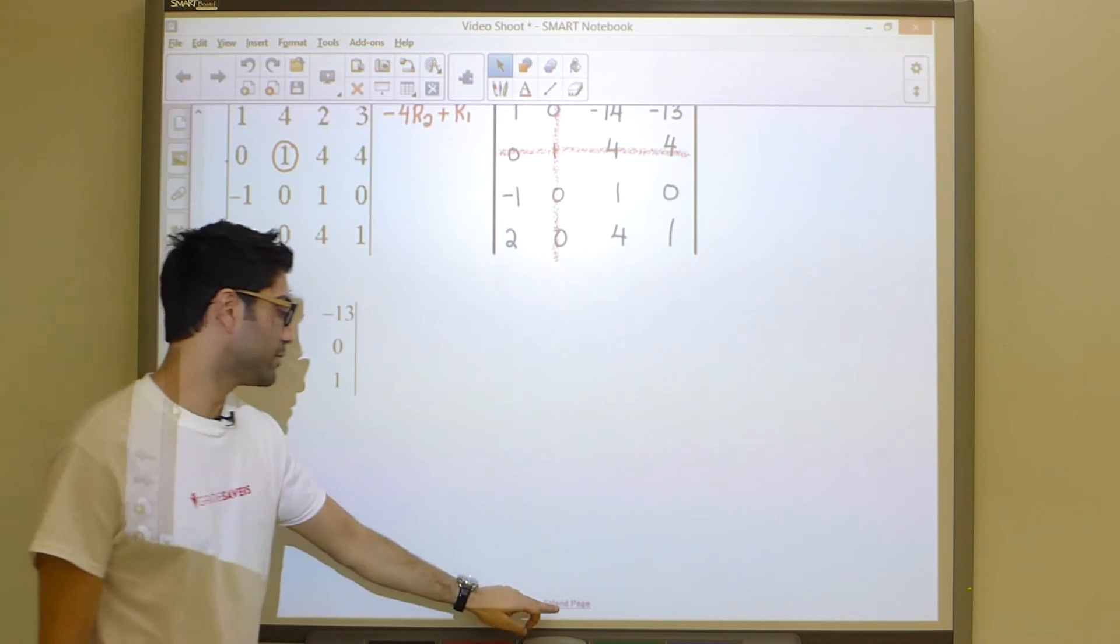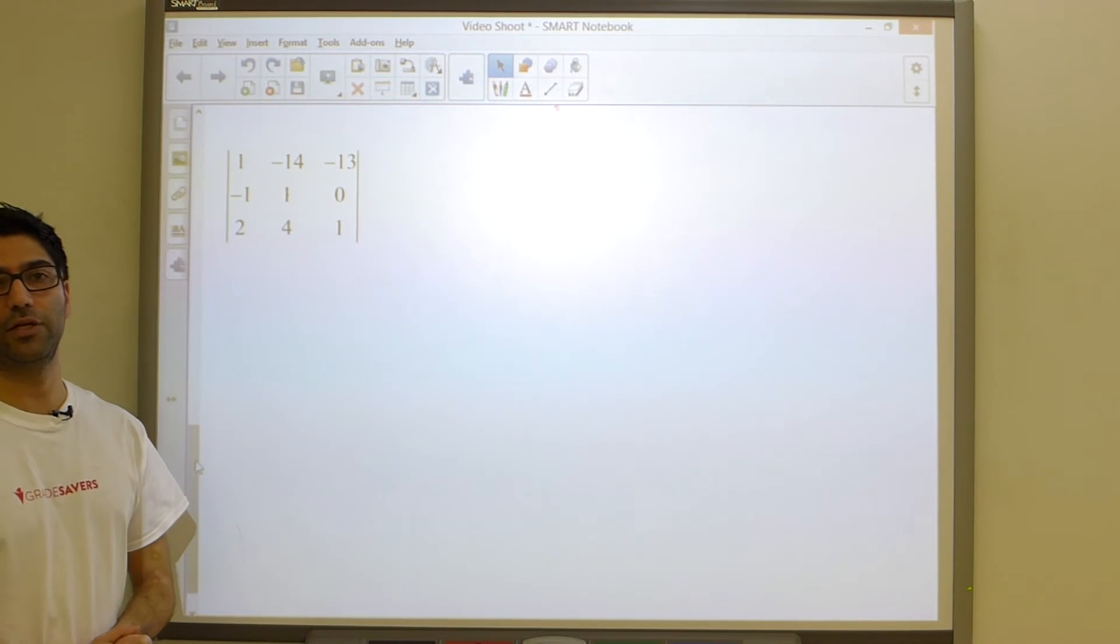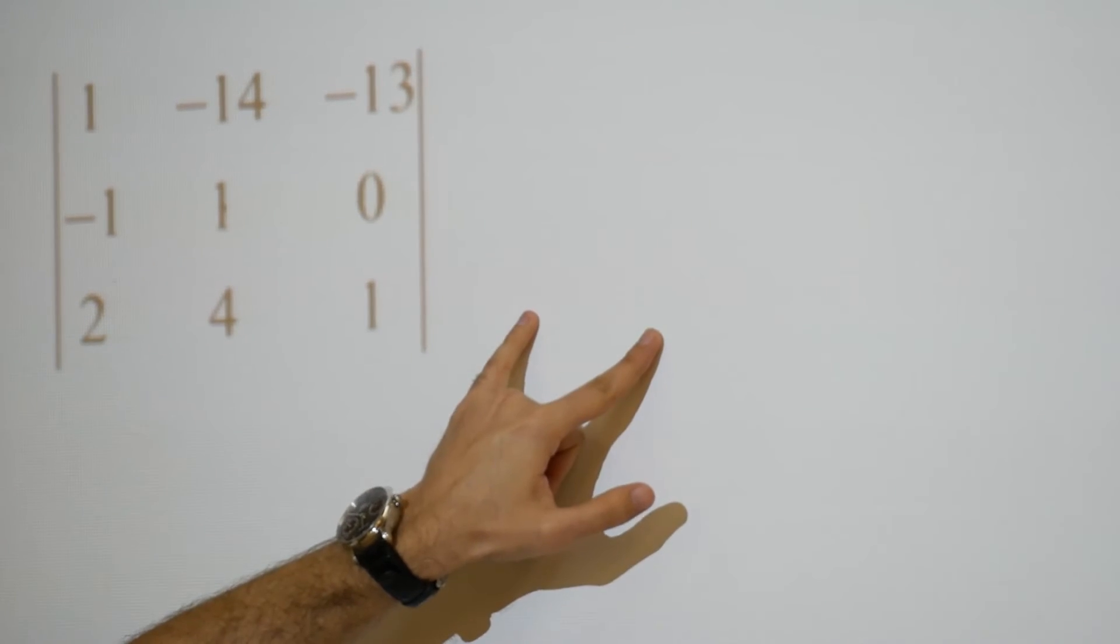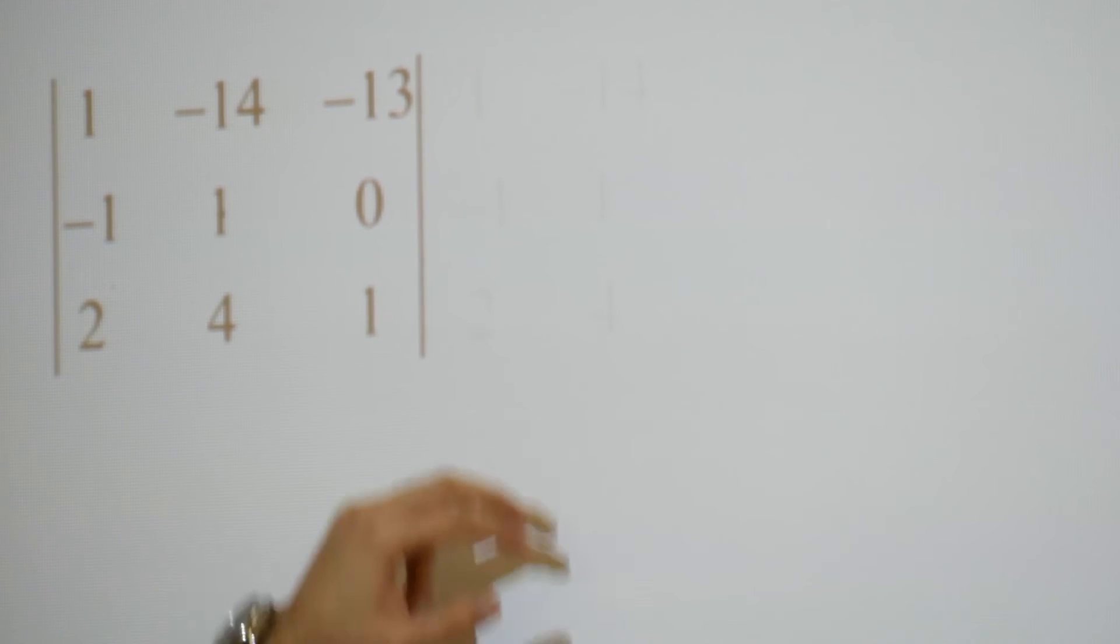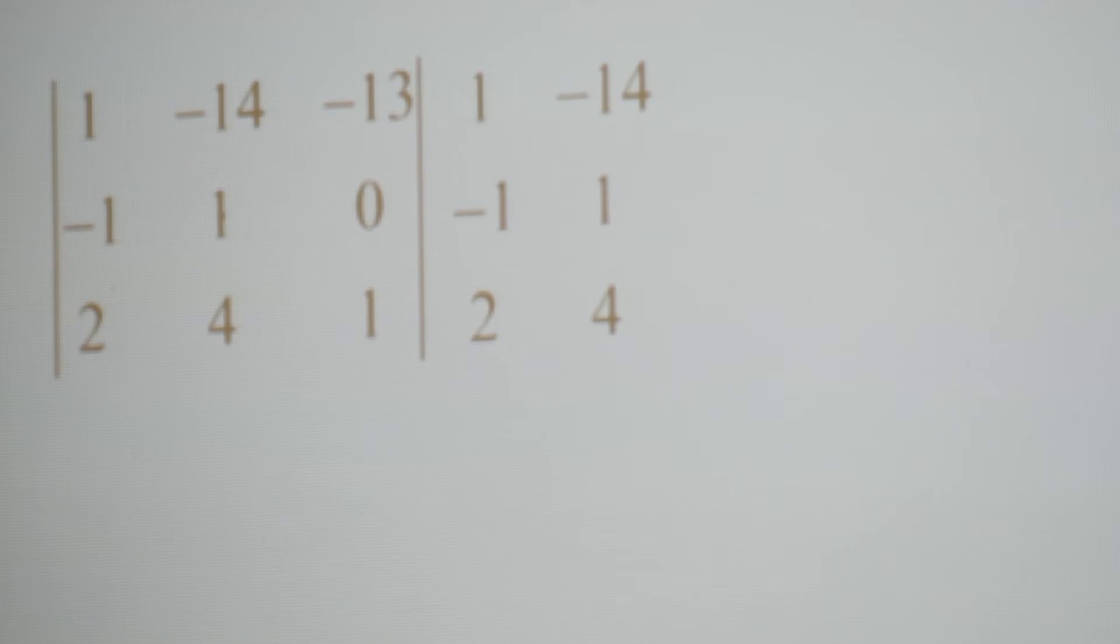To refresh our memories, remember how to take a 3 by 3 determinant. What you're going to do is you're going to copy or re-copy the first two columns right over here. Once that is done, once these two columns have been re-copied, you will multiply every single diagonal that contains 3 entries.